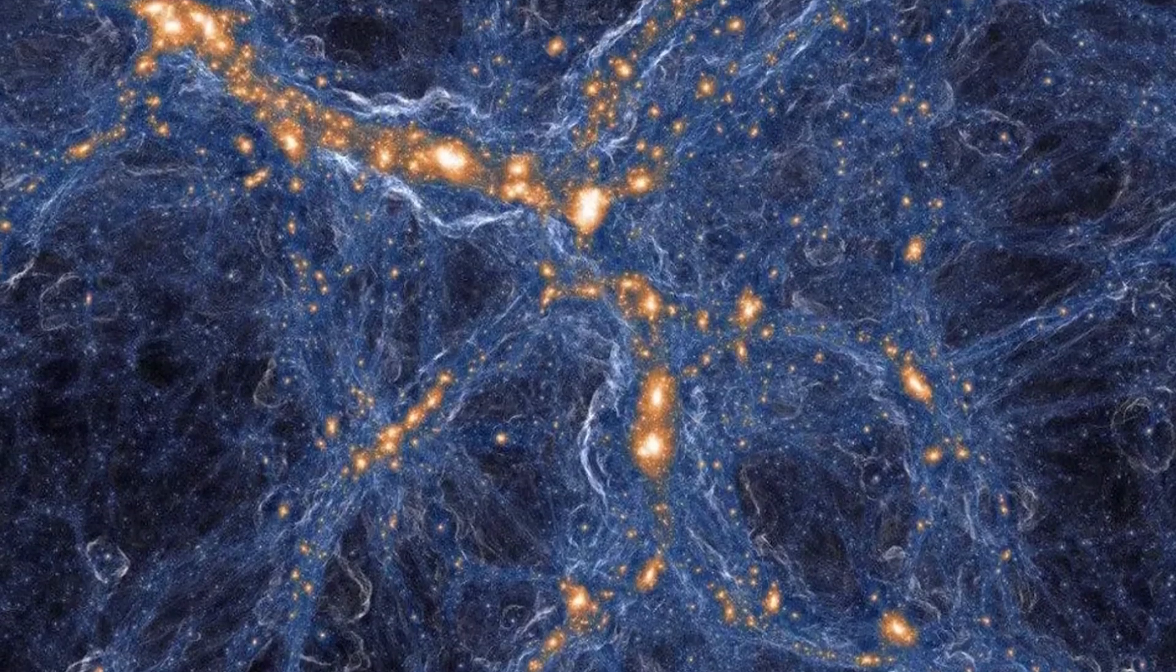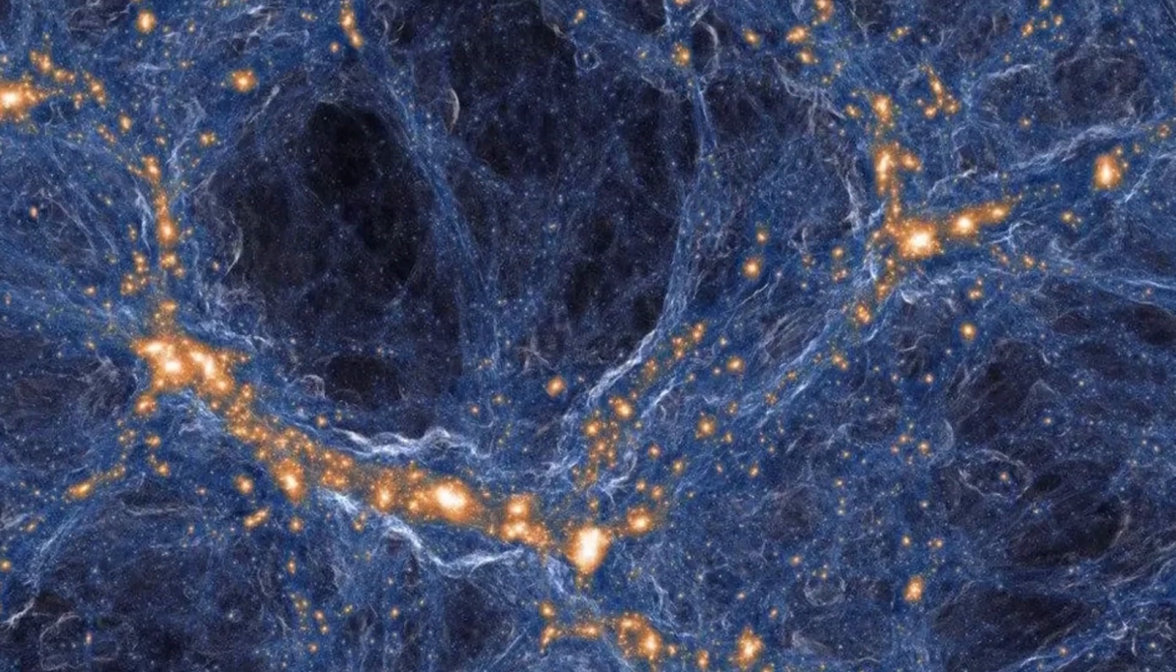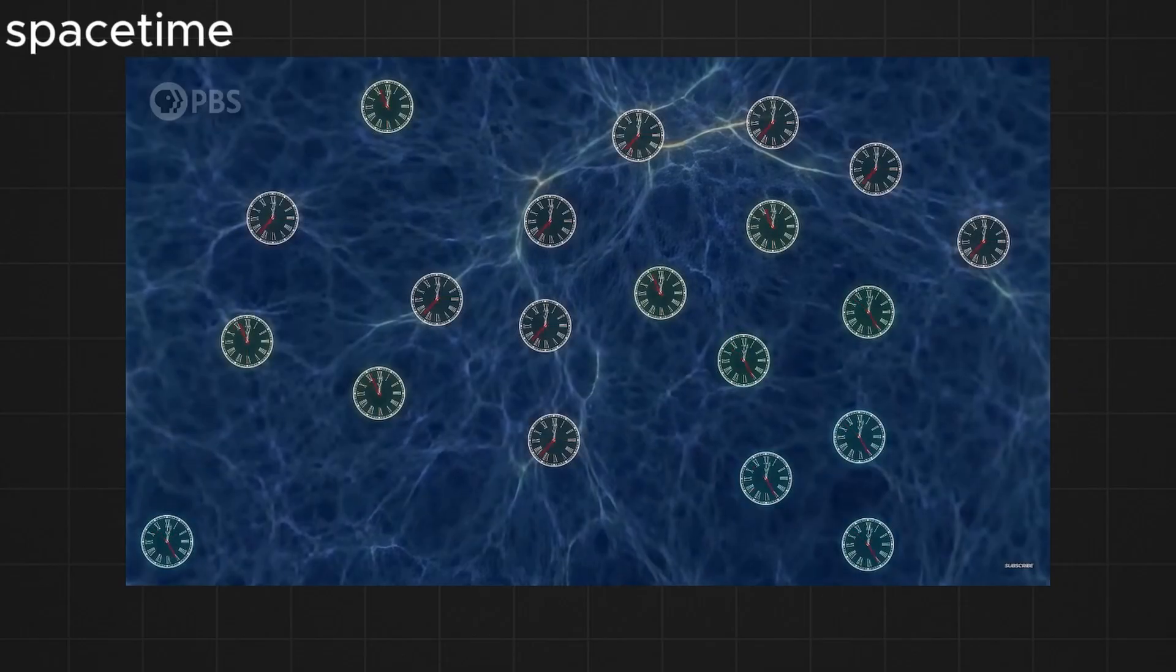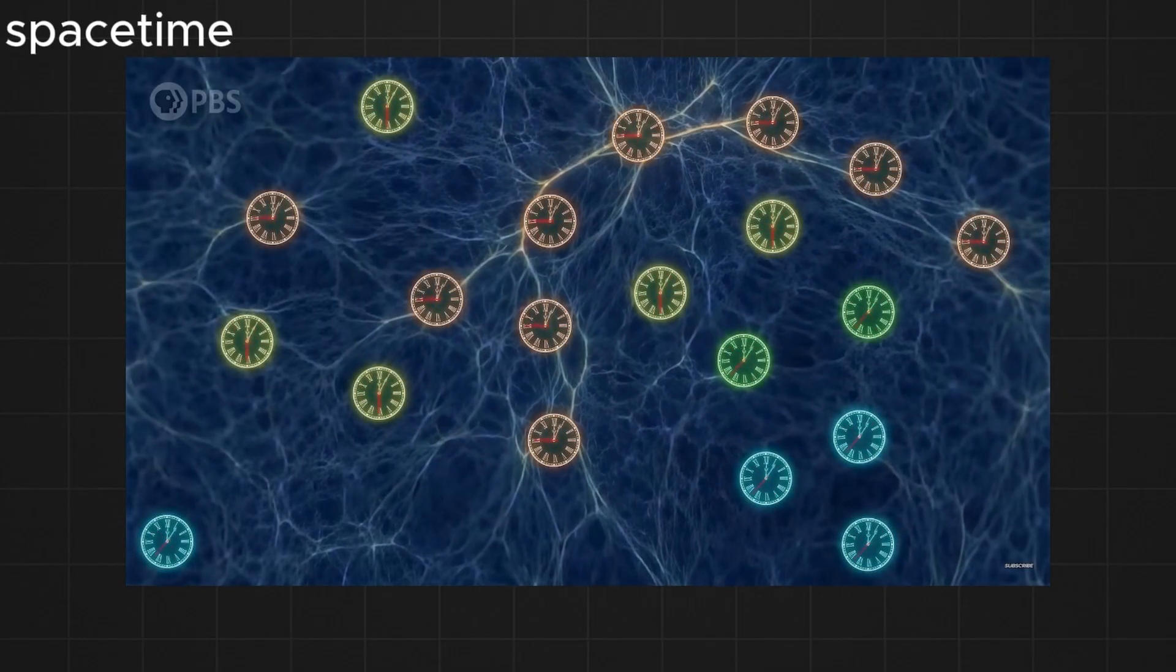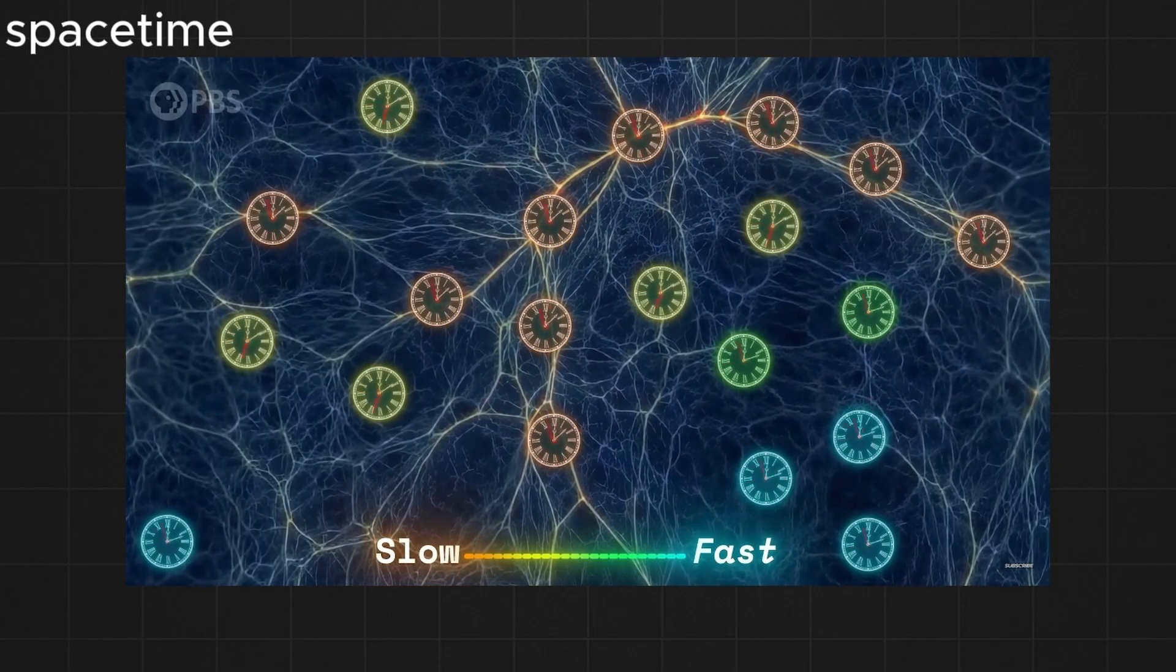You see, the universe is not uniform. There are regions like galaxy clusters full of matter with very strong gravitational fields. Other regions of the universe are almost empty, complete nothingness and darkness spanning millions of light years. This uneven distribution of matter causes time to flow differently across the universe.